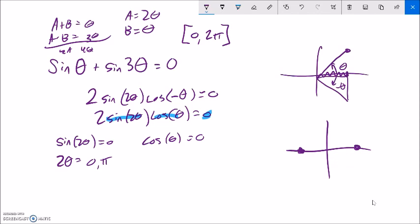And if I think about when cosine is 0, cosine is width. So it happens here and here, which is pi over 2 and 3 pi over 2.